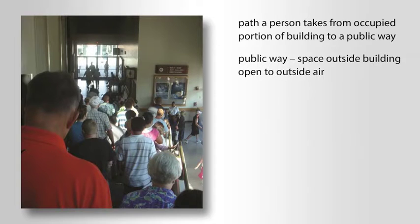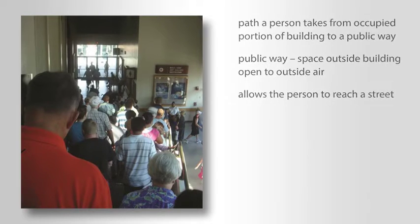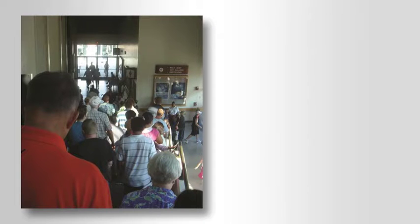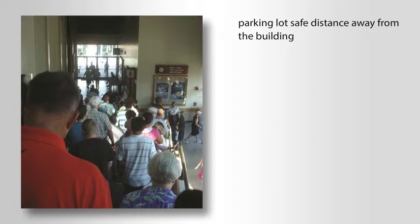The public way is a space outside the building open to the outside air that allows the person to reach a street or some other type of public right-of-way. An example of a public way can be a parking lot a safe distance away from the building or the public street itself.